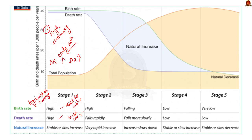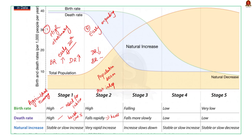The second stage is called the early expanding stage. In this stage, the death rate starts falling but the birth rate remains the same. Due to the higher birth rate and rapidly falling death rate, the population starts increasing rapidly. This stage is called the population boom or population explosion. India was in the early expanding stage post-independence. With the expansion of modern medical facilities, the death rate declined rapidly, but since India was predominantly rural, mainly dependent on agriculture, and literacy was low, there was a high birth rate. Due to this, the population increased rapidly in India.